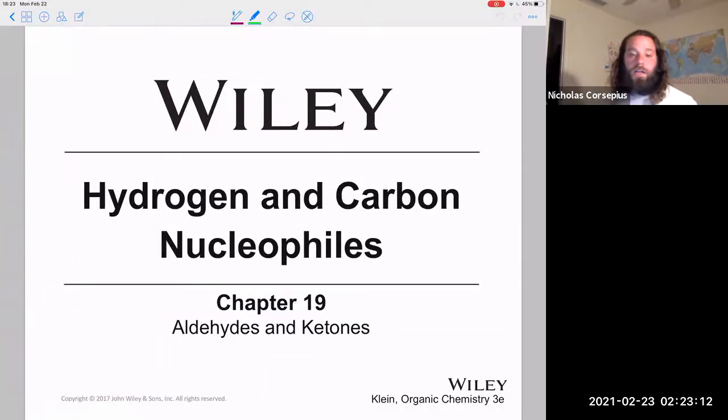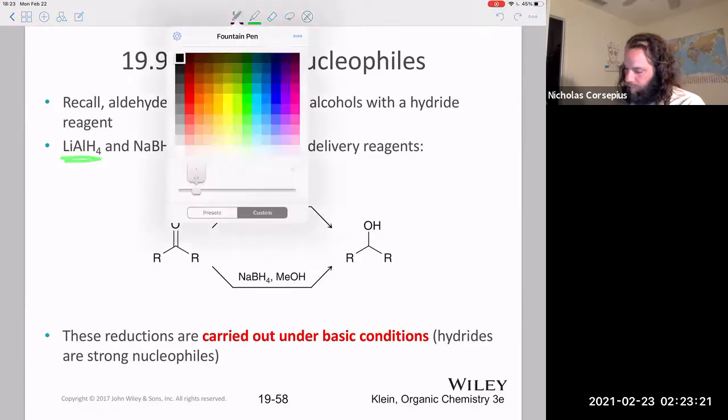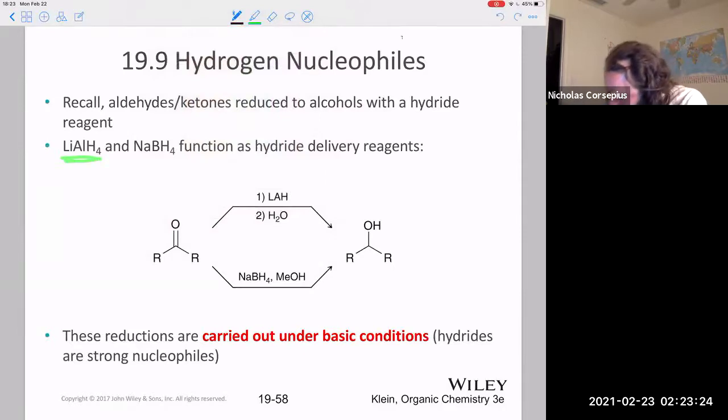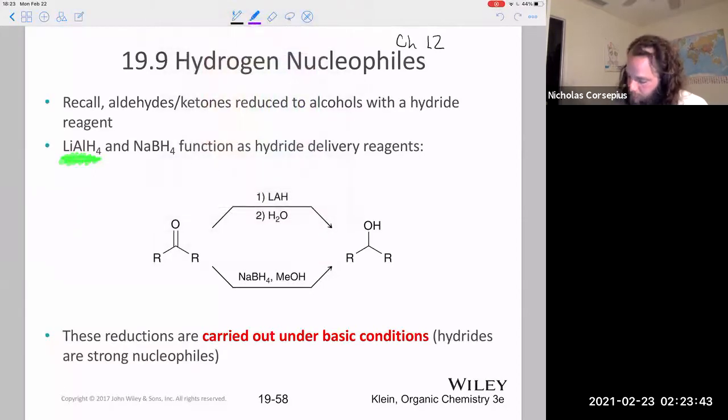All right, so now we're going to talk about hydrogen and carbon nucleophiles. We've actually learned, back in chapter 12, I'll link this in the lecture slide, chapter 12, the reduction of aldehydes and ketones to form alcohols. We learned about two reducing agents, lithium aluminum hydride, the book calls it LAH, and sodium borohydride.